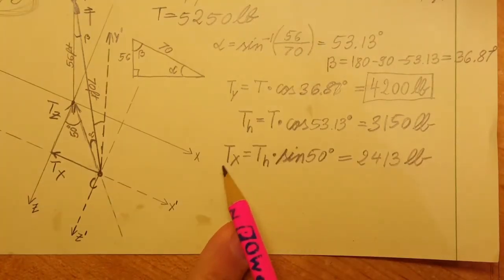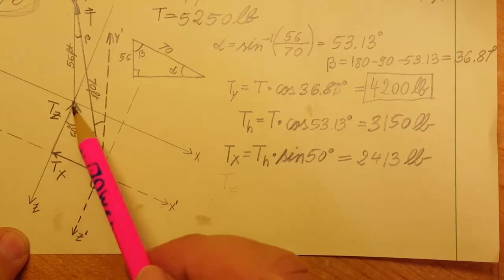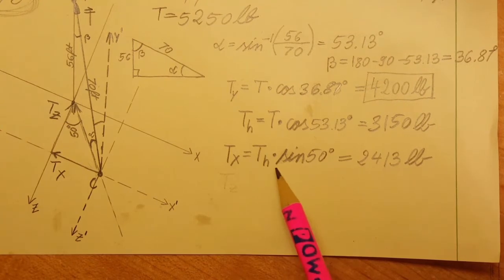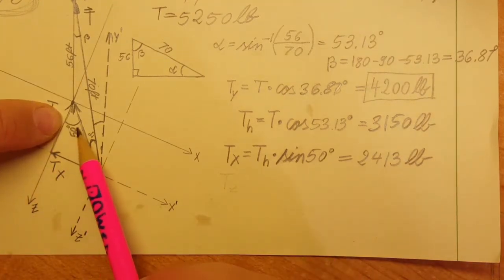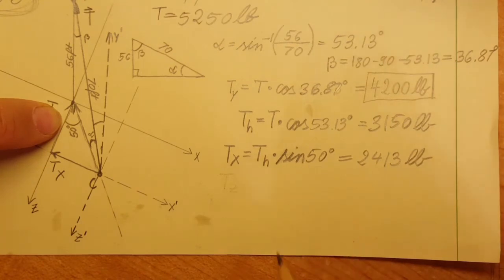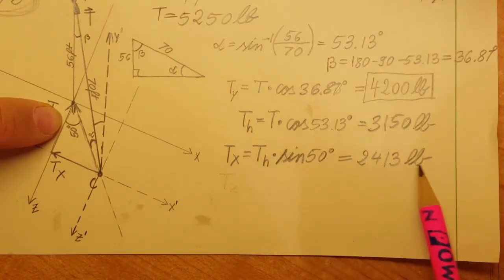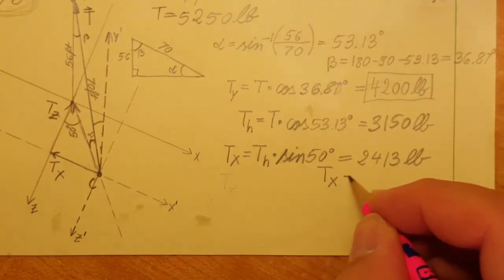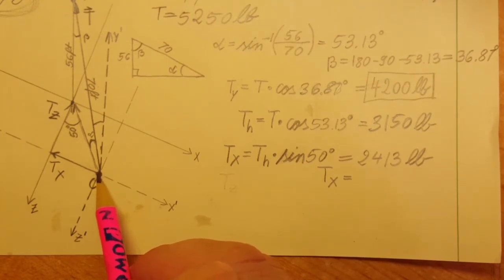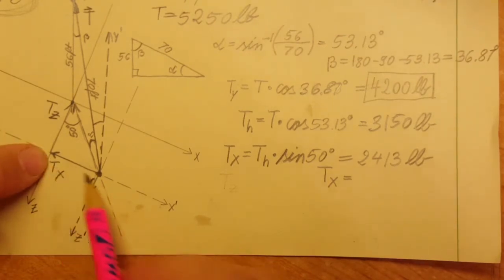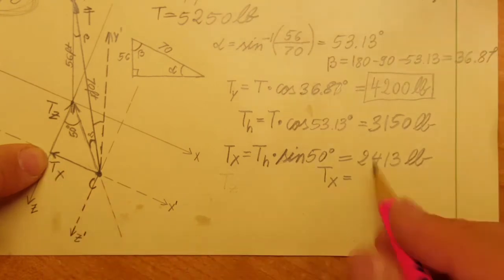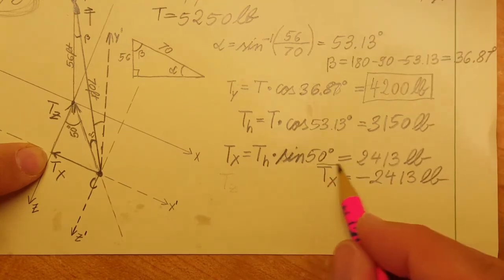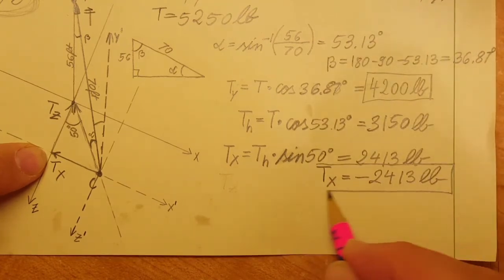To calculate T_x, we're going to use this triangle with T_h as the hypotenuse times sine 50 degrees. This angle is given, so this gives us 2413 pounds. But we are not done yet. Looking at our origin on the x axis, T_x is pointing this way, so therefore this is negative 2413 pounds.